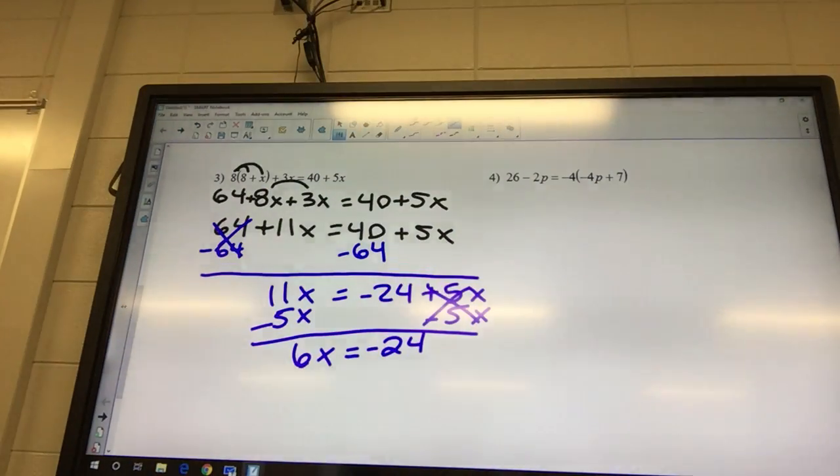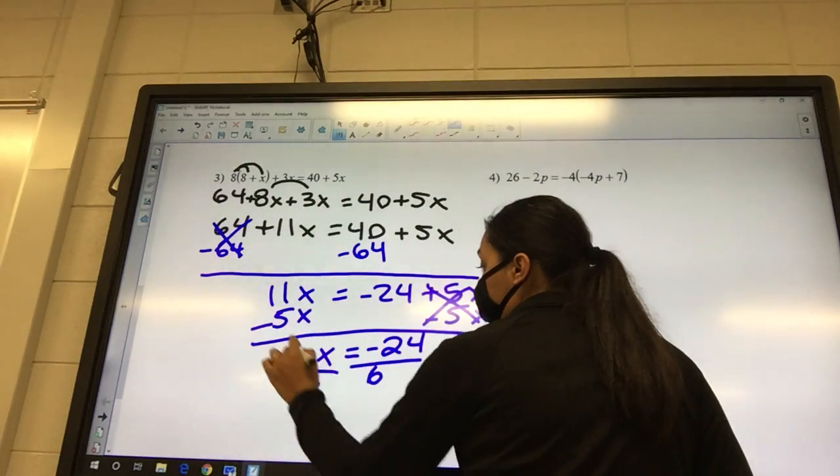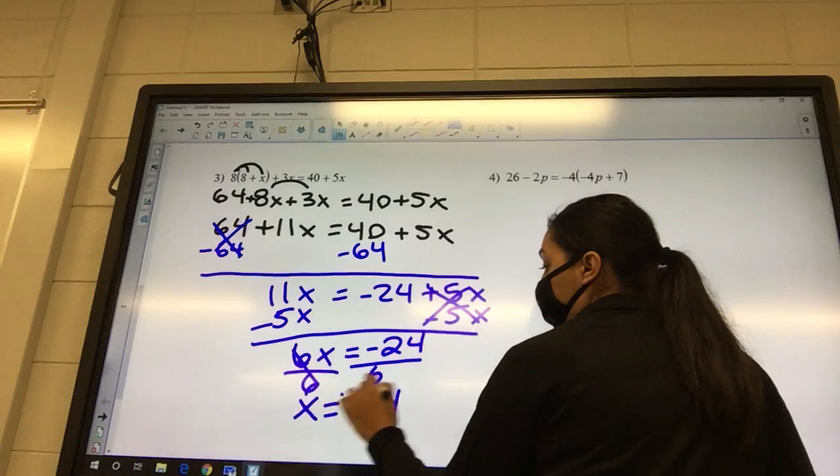What's our last step, always? Divide both sides by 6. X equals negative 4.